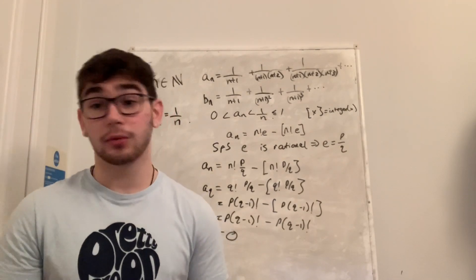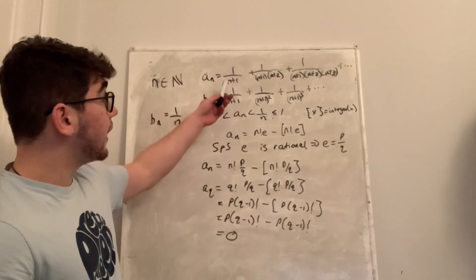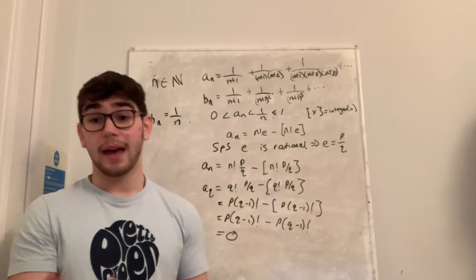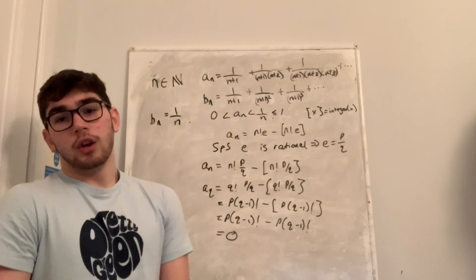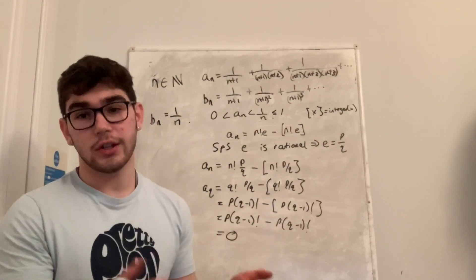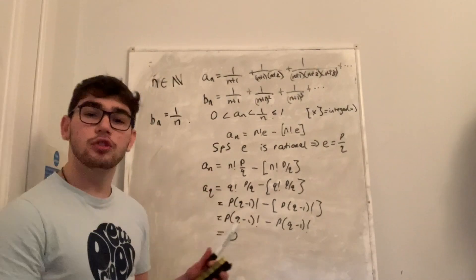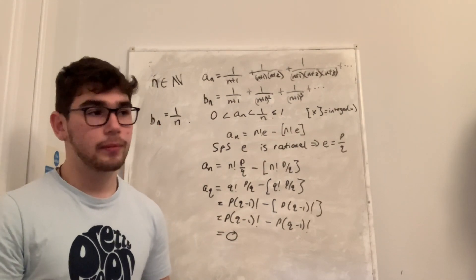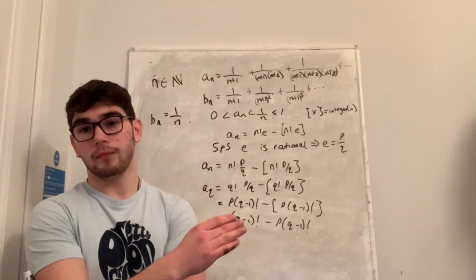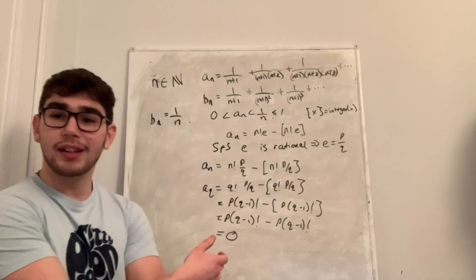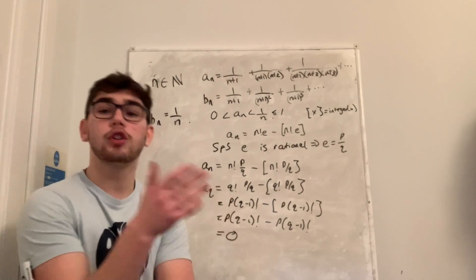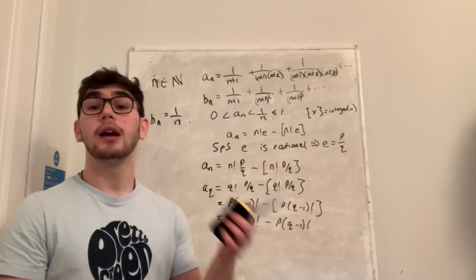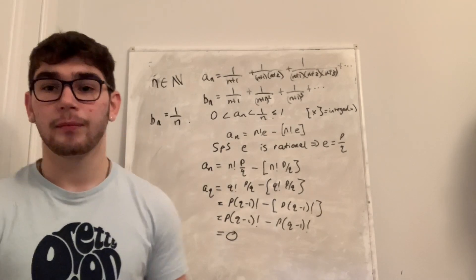To summarize — this was taken from a STEP question — we defined aₙ and bₙ, showed bₙ is a geometric series with the leading term removed so bₙ = 1/n, showed 0 < aₙ < 1/n by term-by-term comparison, proved the neat identity aₙ = n!·e − ⌊n!·e⌋, then supposed e = p/q rational, deduced a(q) = 0, contradicting aₙ being strictly positive. Therefore e is irrational.